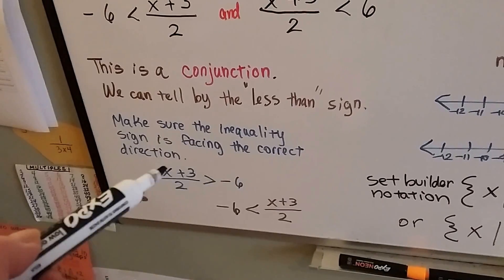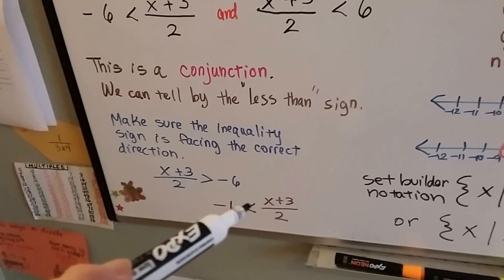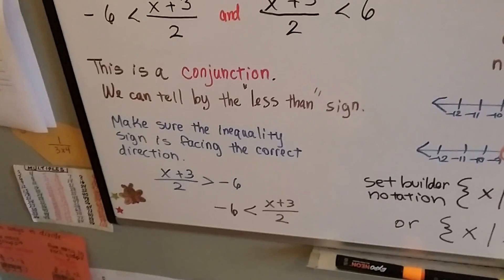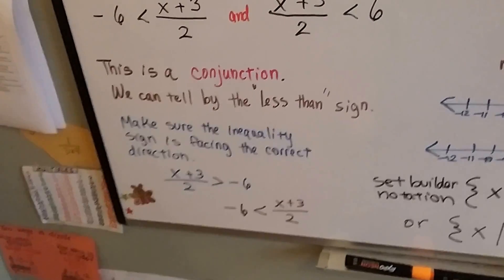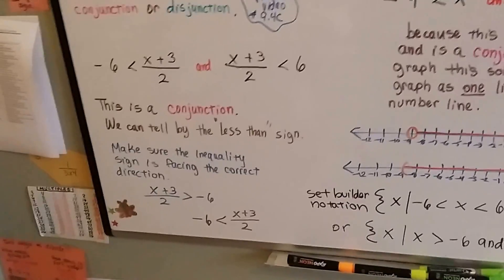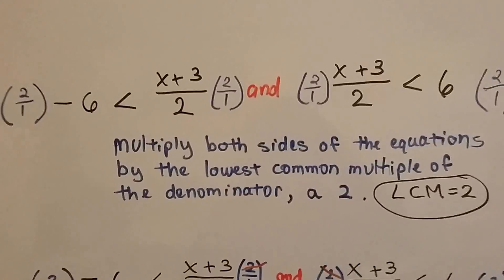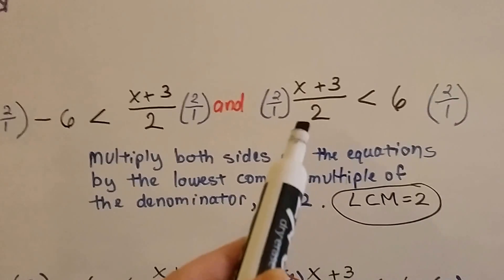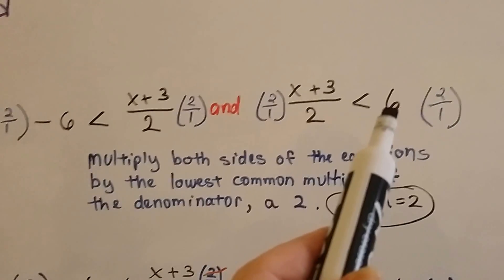So as long as the big part is facing it, it doesn't matter which direction it's going. It just has to be facing the correct one. So you could write it either way. Just make sure the big part on a conjunction is facing that fraction equation. So now we've got negative 6 is less than x plus 3 over 2, and x plus 3 over 2 is less than a positive 6.